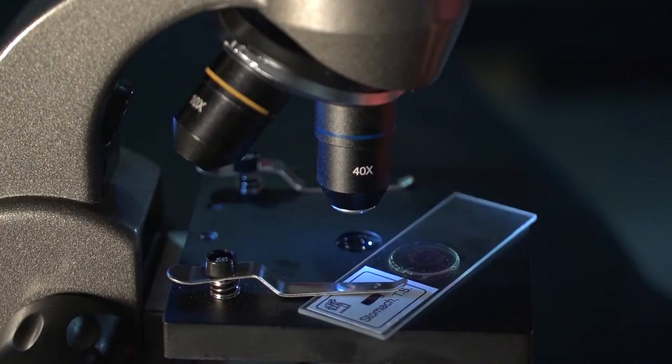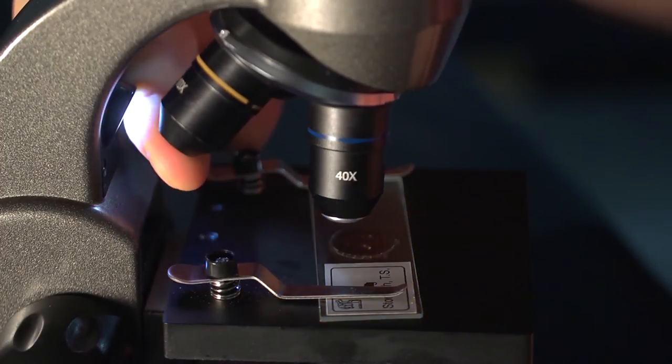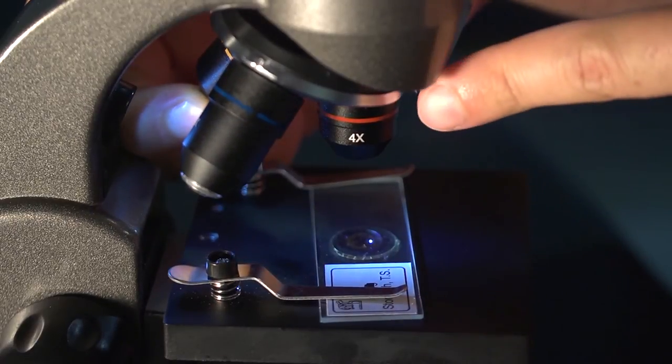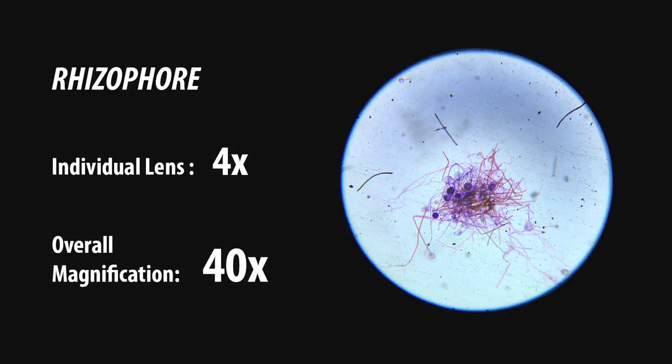When using this microscope, it's recommended that you start on the lowest magnification and then work your way up. In this case you would start out on the four power lens. At this magnification you will have an easier time observing the surface area of your specimen.